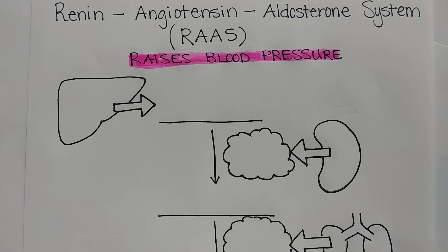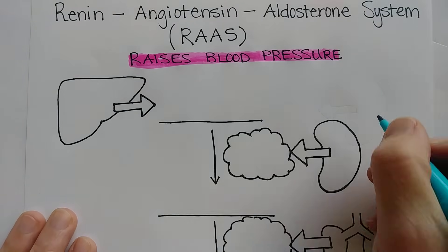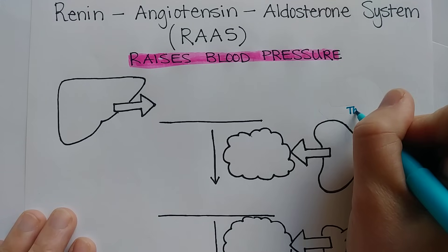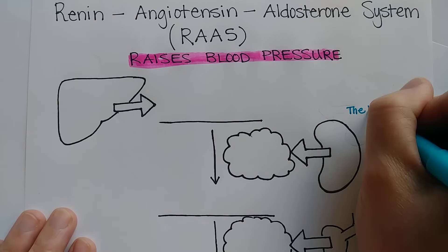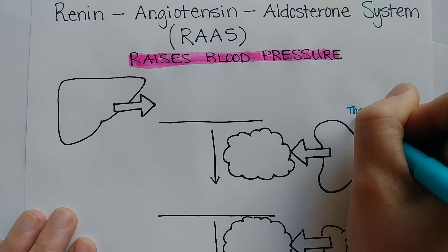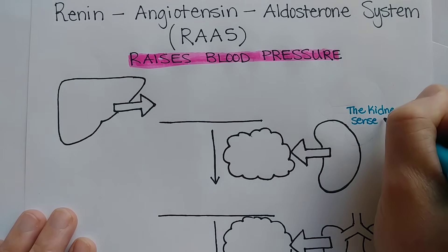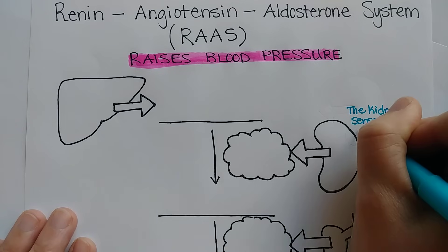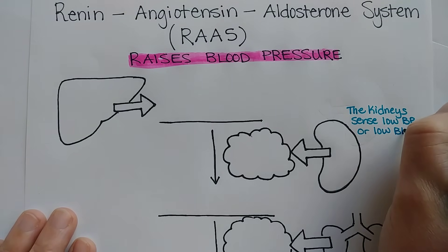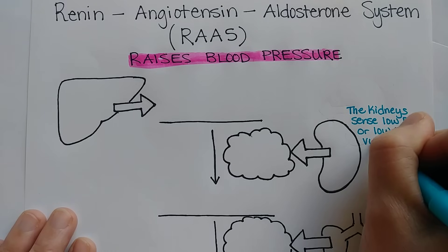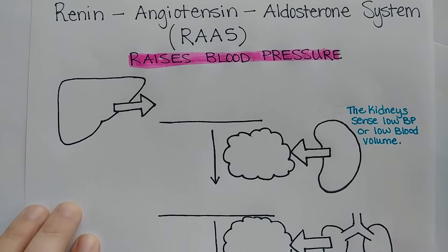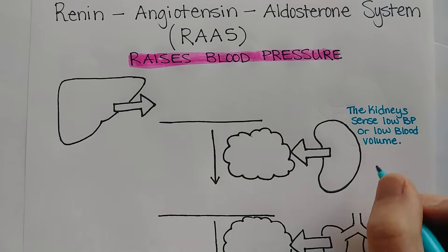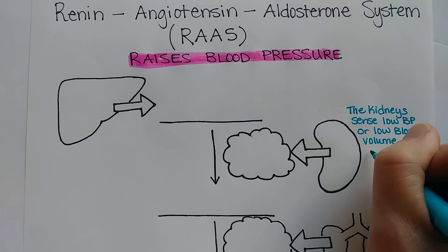All of this starts with the kidney when it is able to recognize low blood pressure. The kidneys are able to sense low blood pressure or low blood volume, and they sense it with specialized cells near their glomerular capillary beds called the juxtaglomerular apparatus.